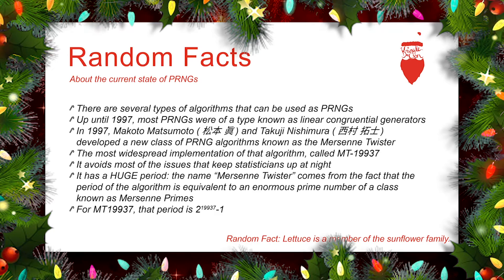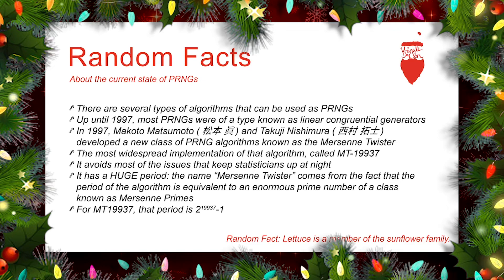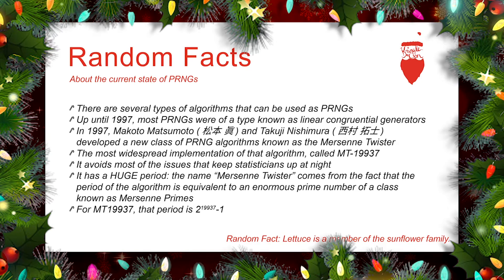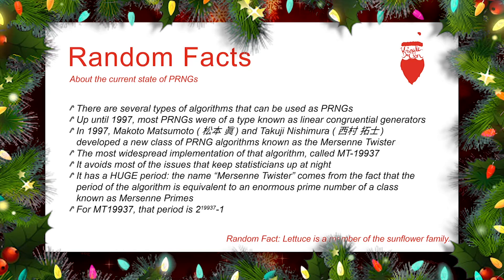Those were horribly bad from a statistical perspective, and in fact they were so bad that they really couldn't be used when you were doing some kind of heavy-duty research that required random numbers. In 1997, Makoto Matsumoto and Takuji Nishimura developed a new class of pseudo-random number generation algorithm called the Mersenne Twister.